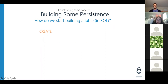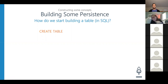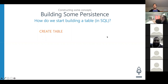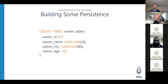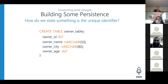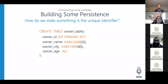After CREATE, the next keyword is TABLE, then the table name. In this case, we're going to be creating the owner table. After that, we'll include owner ID, name, city, and age — simple information about what a dog owner would have. How do we state that something is a unique identifier? Primary key. That primary key indicates which column is the unique identifier to identify which row we want.